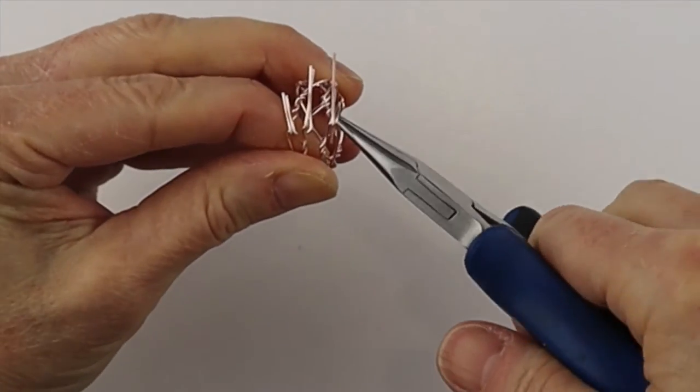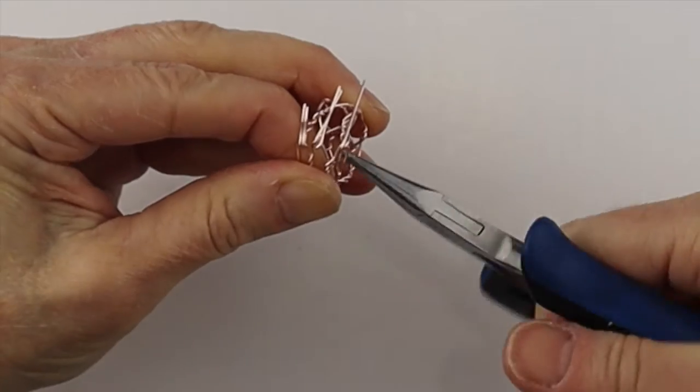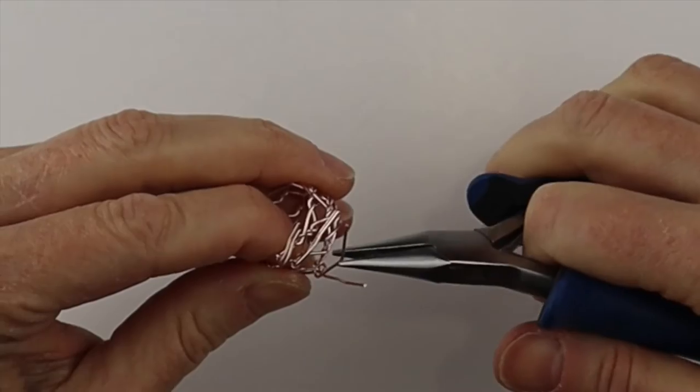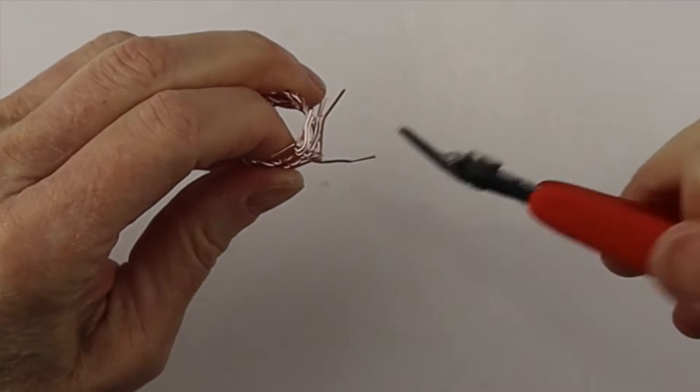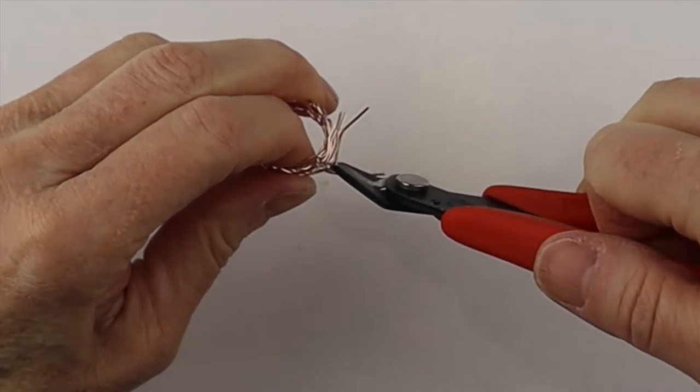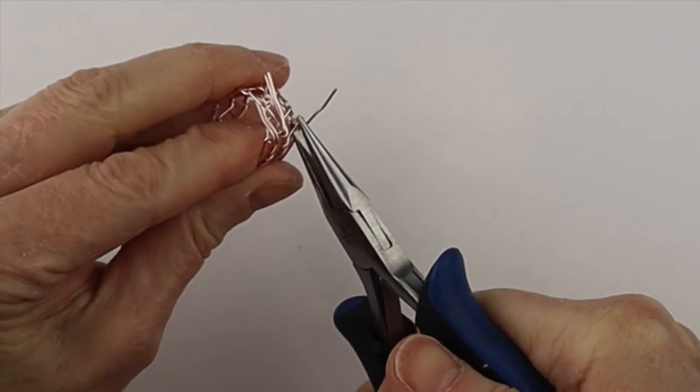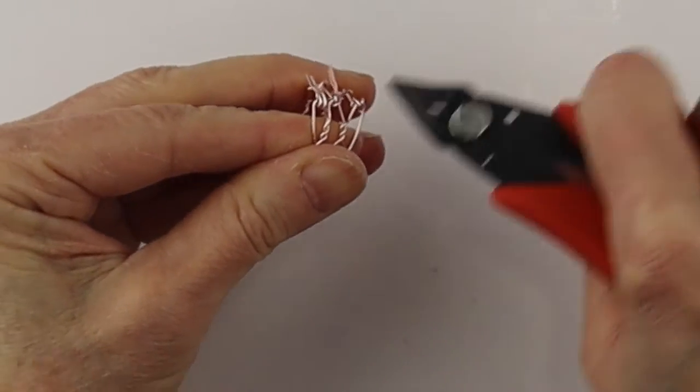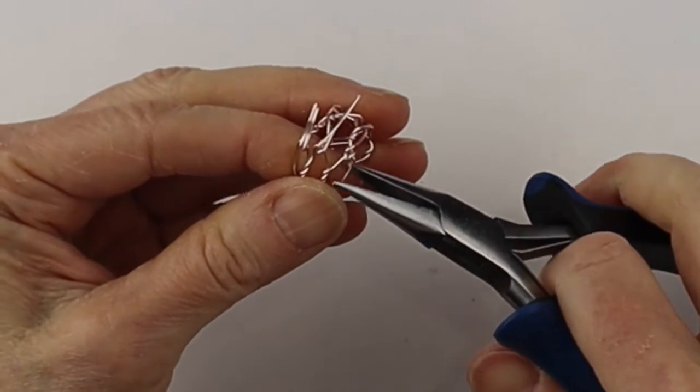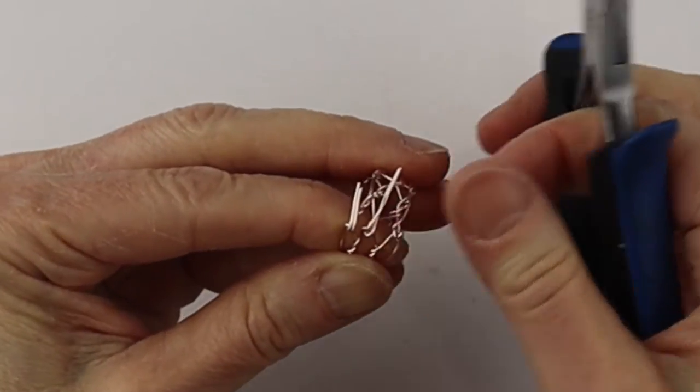So now take one of the ends, the outer end, and loop it back through to make it more secure. So we're going to loop it through and then trim that flush, and then you could pinch in that little pokey end. And then keep going with the ends in this manner.